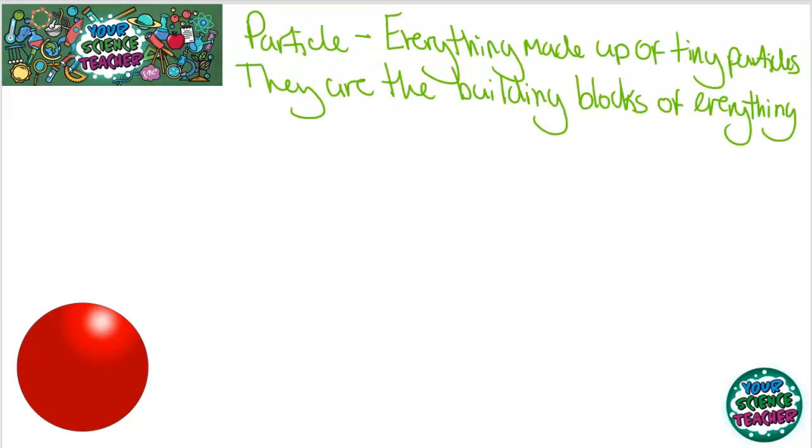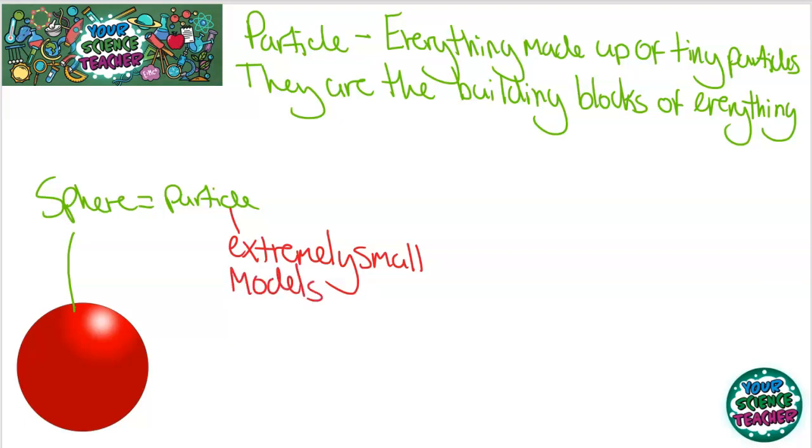Now, what do particles actually look like? Particles do come in many different shapes and sizes, but to keep it simple, what we do to represent particles is draw a sphere. And the reason why we draw a sphere to represent particles is because particles are extremely small. In fact, they are so tiny that no one can go as far as seeing one individual particle because they're so small, and that is why we use models in science.